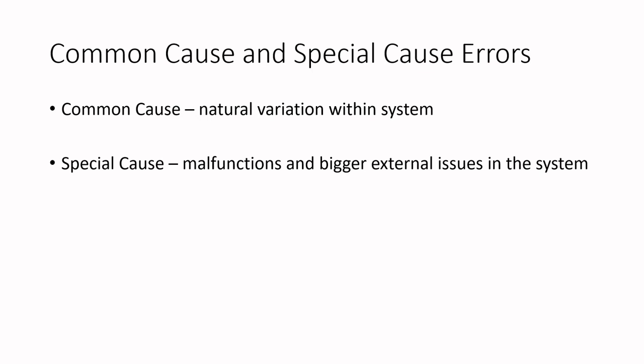But within food systems, it's not like we can have the same level of precision as you would see within certain other manufacturing systems such as automotive or electronics. Because of the nature of the product, you can have much tighter quality on the outputs being transferred into your system. Special cause variation or special cause errors are these bigger malfunctions and bigger external issues within the system.